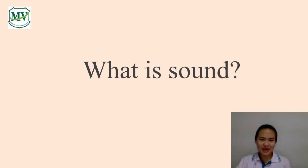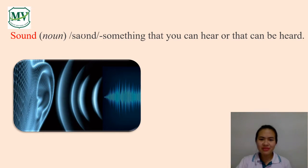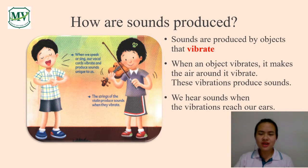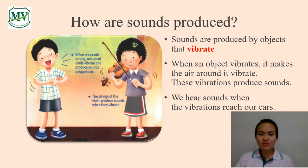Do you know what is sound? Sound is something that you can hear or that can be heard. Sounds are produced by objects that vibrate. When an object vibrates, it makes the air around it vibrate. These vibrations produce sounds. We hear sounds when the vibrations reach our ears.